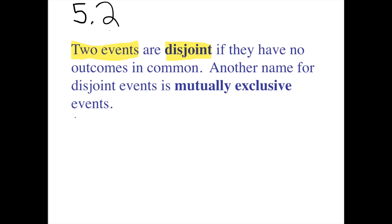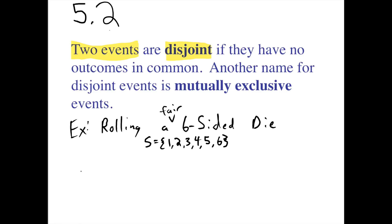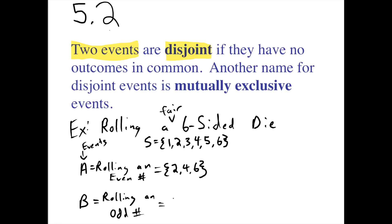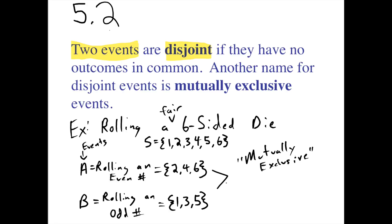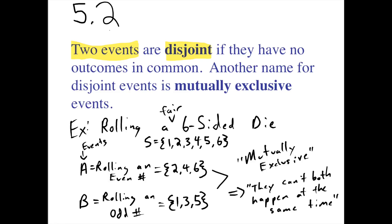Let's look at an example using the random phenomenon of rolling a die. Two events that are mutually exclusive would be event A: rolling an even number, and event B: rolling an odd number. Together, we call these two events mutually exclusive — another way to say this is that mutually exclusive events can't both happen at the same time. There's no way you can roll a fair six-sided die and get an outcome that is both even and odd.